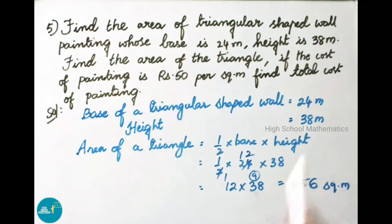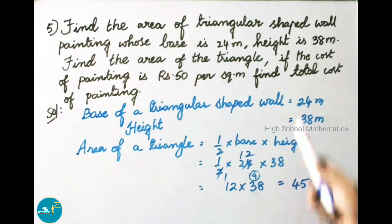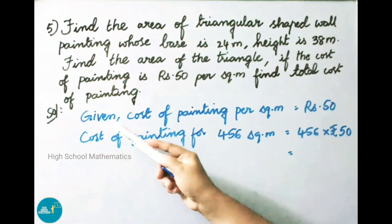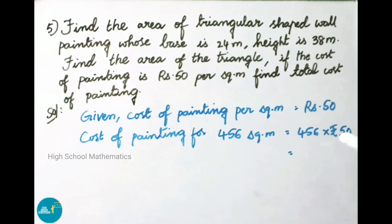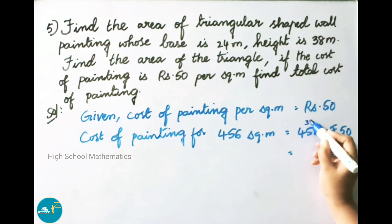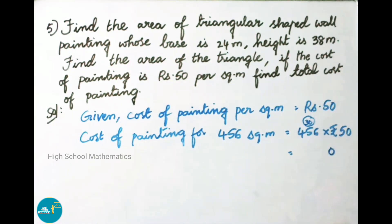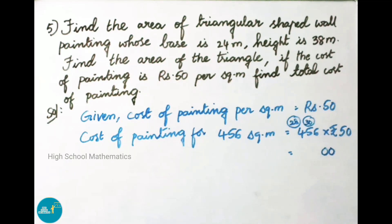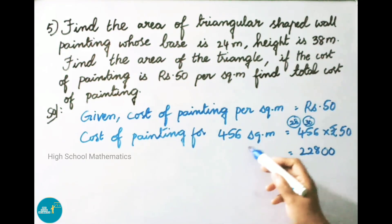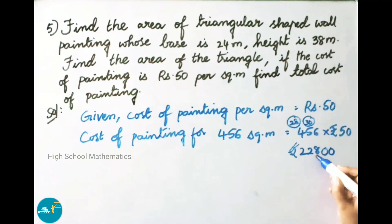Cost of painting per square meter is 50 rupees. Total cost equals 456 into 50 rupees. Multiplying: 456 times 50 gives 22,800 rupees. Therefore cost of painting for 456 square meters is 22,800 rupees.